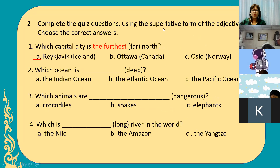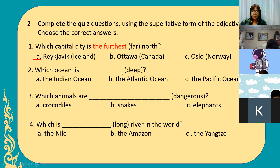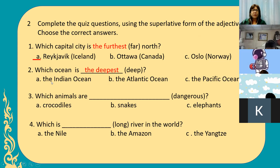Complete the quiz questions using the superlative form of the adjective and choose the correct answers. Number one: which capital city is the farthest north? The answer is Reykjavik in Iceland — it is the farthest north. Number two: which ocean is the deepest? The deepest — it is the Pacific Ocean. Number three for Bacon: which animals are the most dangerous? The most dangerous — snakes.